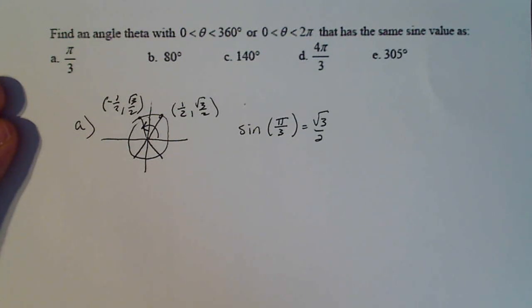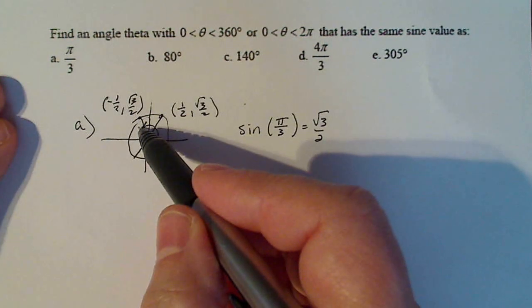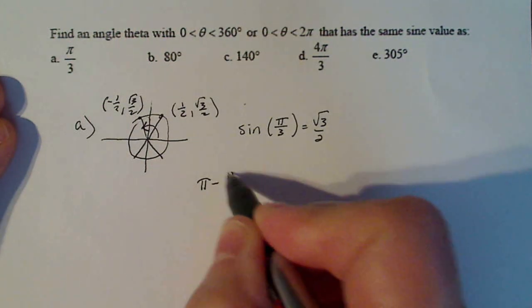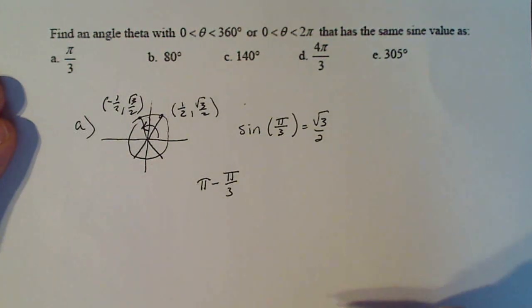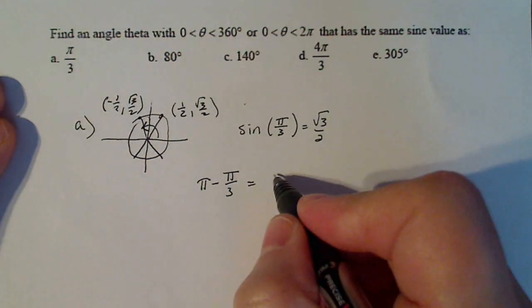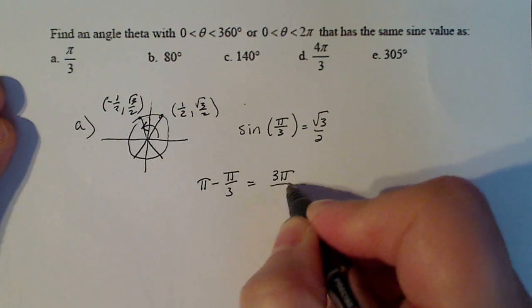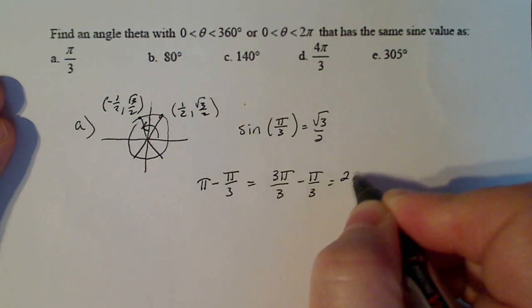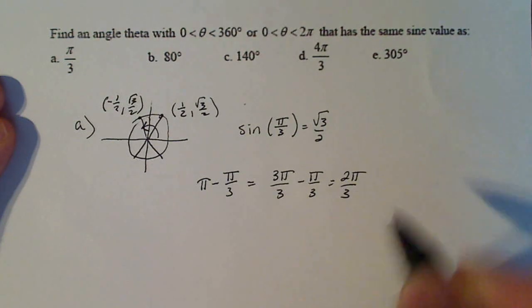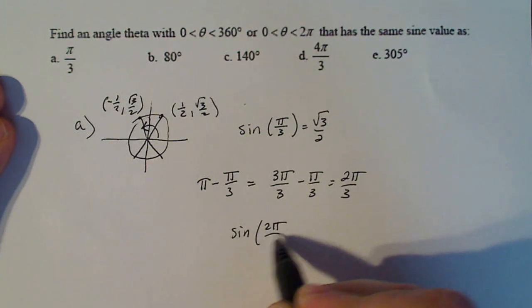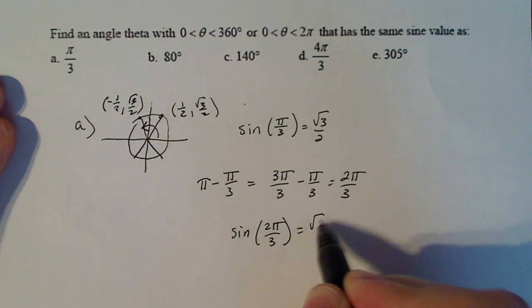So what is that angle? It's got a reference angle of pi over three. So if I take pi minus pi over three, that's going to give me my angle that I want. So that's going to be three pi over three minus pi over three, which is two pi over three. And now I know that sine of two pi over three is equal to square root of three over two.